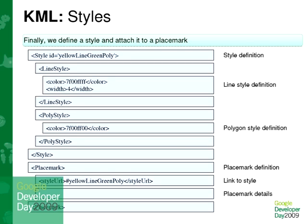If you want to display many placemarks, you can use styles. You can define styles like: every line I trace will be from that color and that thickness. And if it's a polyline, I will use a specific color. So every placemark or every line that uses that style — yellow line, green poly — will have the same layout. It's just like in HTML: you define styles and apply them to the objects.